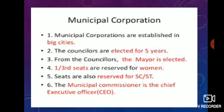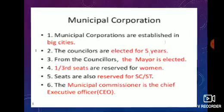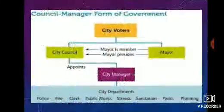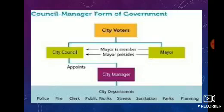The mayor presides over the meetings of the corporation. A deputy mayor is also elected to take care of duties in the absence of the mayor. A Chief Executive Officer or Municipal Commissioner is appointed by the state government and holds office for five years, acting as a link between the state government and the municipal corporation. A municipal corporation can be dissolved earlier by the state government for non-functioning and may remain dissolved for a maximum of six months, within which a new committee must be formed after a fresh election.